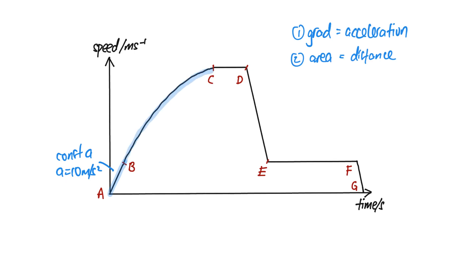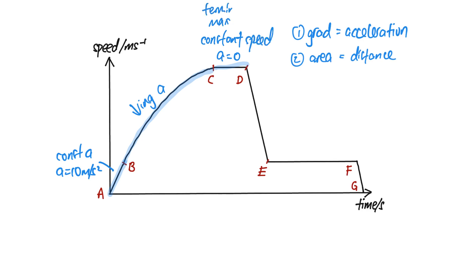From B to C, the gradient is decreasing, so it's a decreasing acceleration. The speed is still increasing from A all the way to C. From C to D, the acceleration is zero — and to be specific, acceleration of zero can mean at rest or moving at constant speed. In this case, it's actually traveling at a maximum constant speed, which is called terminal velocity.